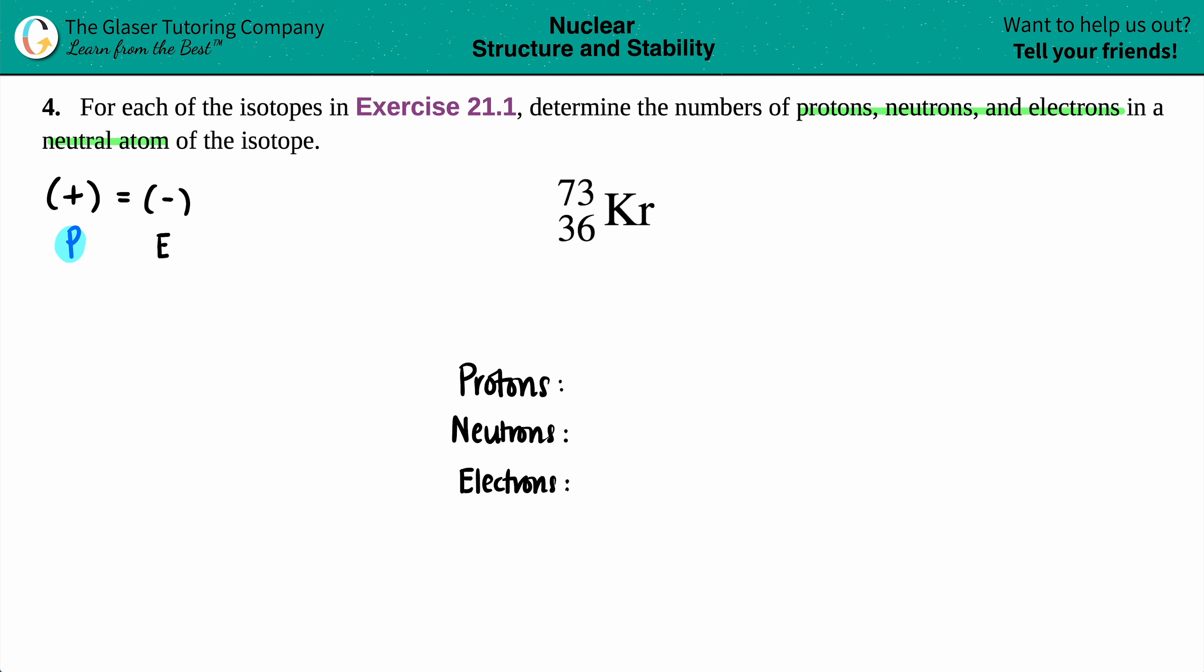So if we have a neutral atom, we know that the number of protons have to equal the number of electrons. So whatever number we get for one of them, we will know the other.